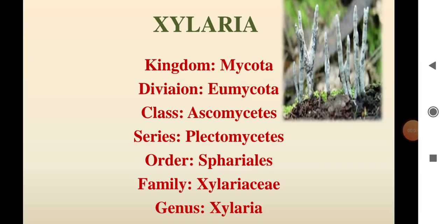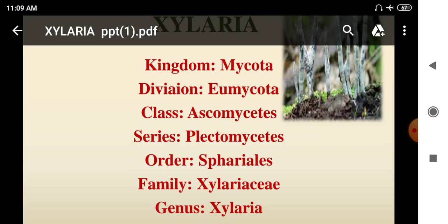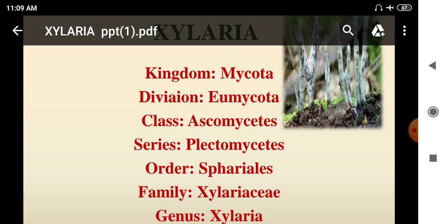Good morning students. In Ascomycota, we have two types: Aspergillus and Cydaria. The classification is: Kingdom Mycota, Division Eumycota, Class Ascomycetes, Series Plectomycetes, Order Frasiales, Family Cydariaceae, Genus Cydaria.